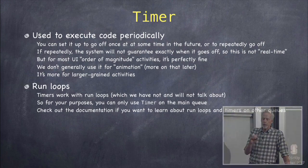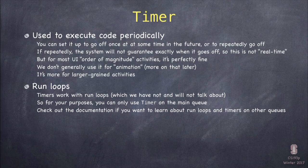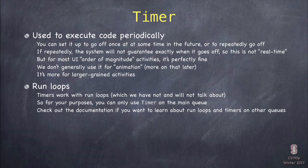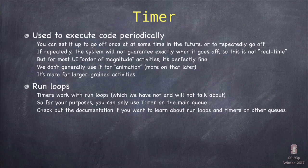Timer is based on a technology called run loops. Run loops are how a certain thread gets all this information — like events from the touch screen, events from the network — and manages to hand them all out to whoever needs to handle them. Run loops aren't super complicated, but the reason I don't really talk about them is the run loop just kind of works on the main queue, and you don't really need to think about it. But if you ever want to use a timer off the main queue, you'll have to learn about run loops, because timers are totally based on the run loop.